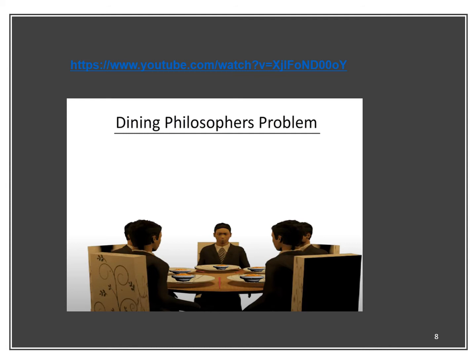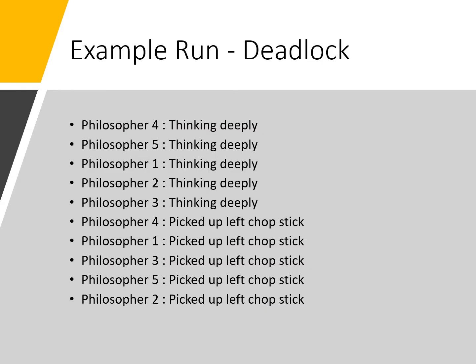When I run the code — this is actually the output I get the third time — each of the philosophers starts thinking. Then, in some order, they all pick up their left chopstick. As you saw in the previous video, if they all have their left chopstick, none of them can eat because we have a deadlock. Feel free to run the code — it's available in the examples and you'll see very similar results.